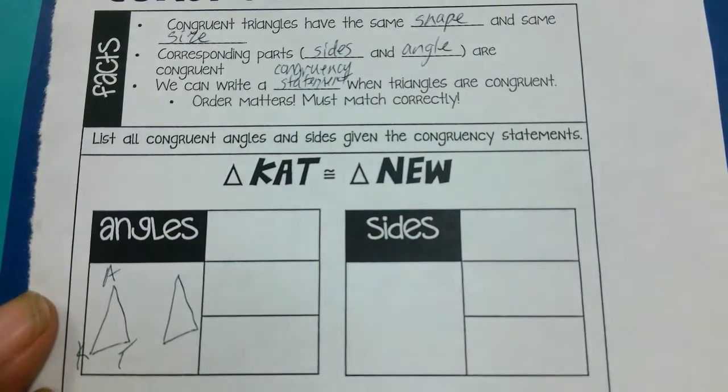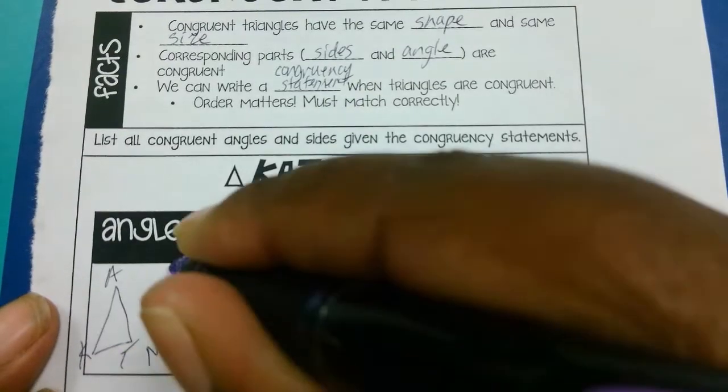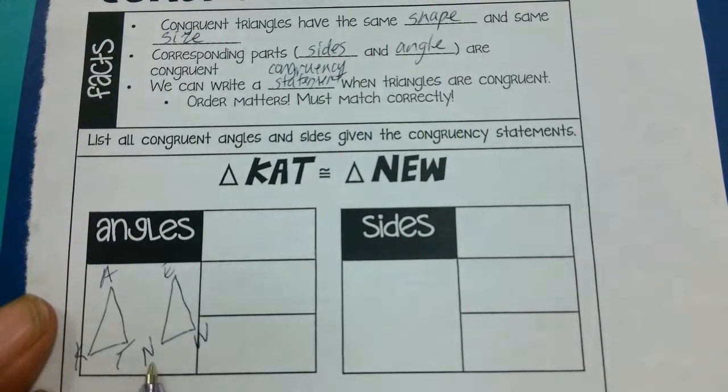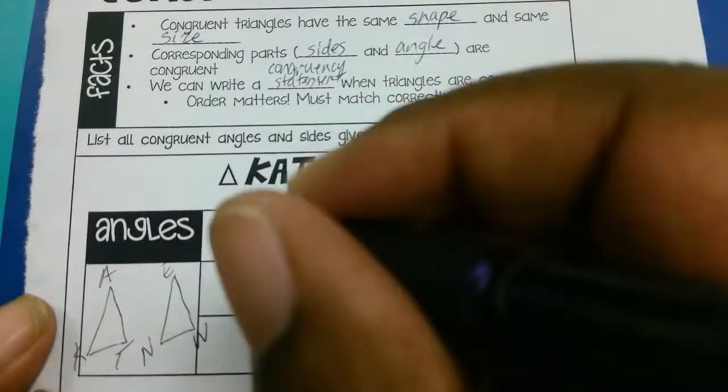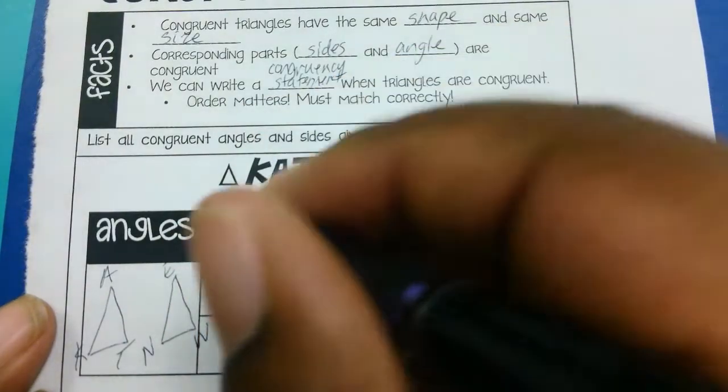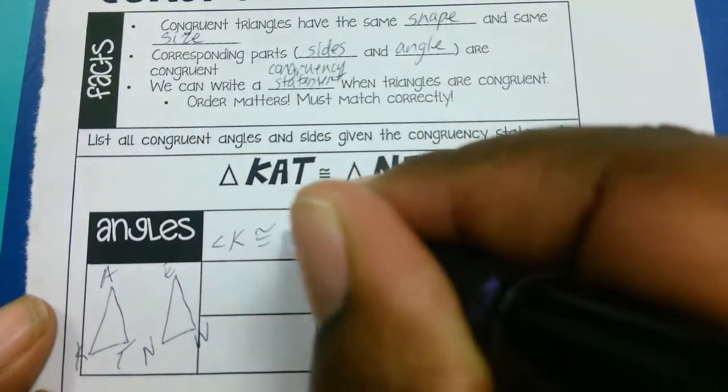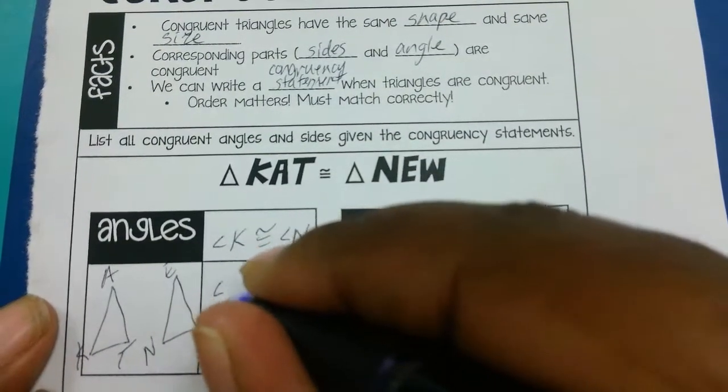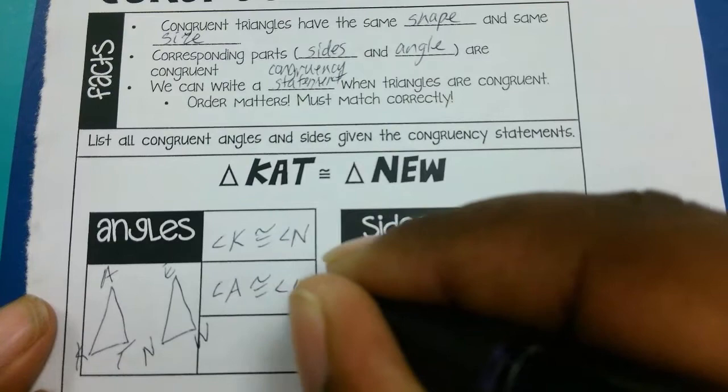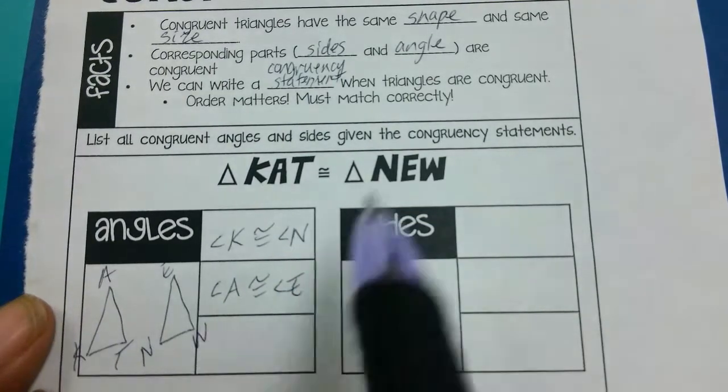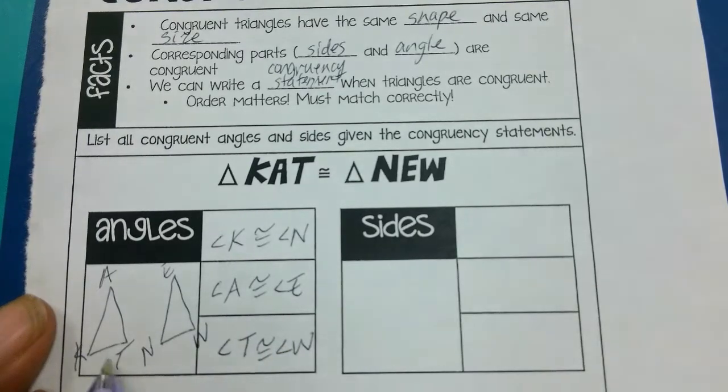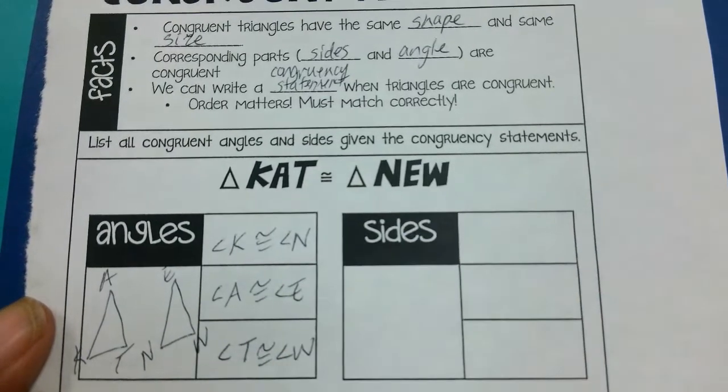Therefore I can just look and see, okay, K corresponds with N, A corresponds with E, and T corresponds with W. Then I can write the congruence part. So angle K is congruent to angle N because those are corresponding. Angle A is congruent to angle E because those are corresponding, and angle T is congruent to angle W because those are corresponding.